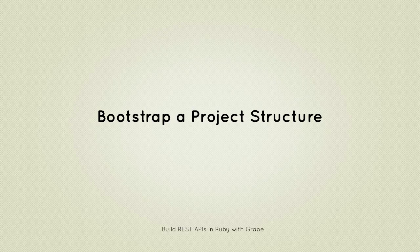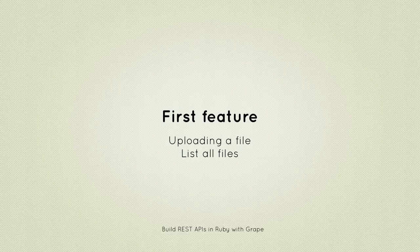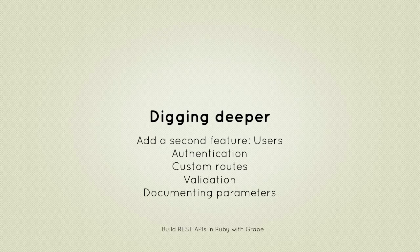We're going to start by building our first feature, which should obviously be uploading a file. Then we'll list all of the files so we can assert that files are being correctly uploaded. We'll also make sure that each file is correctly specified by its URL, or rather its path in the file system. We're also going to build a second feature regarding users, which is great for showing off Grape's authentication system using HTTP — since we're dealing with APIs, HTTP basic authentication is a perfect candidate.